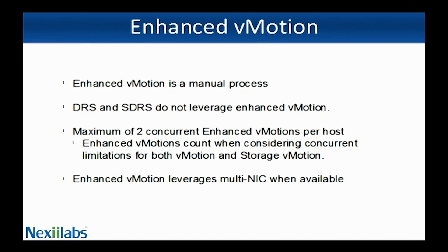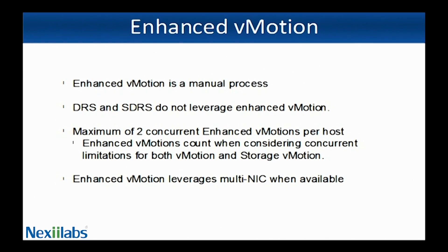Enhanced vMotion is a manual process. DRS and Storage DRS do not leverage Enhanced vMotion. A maximum of 2 concurrent Enhanced vMotions per host can happen, and Enhanced vMotion counts toward concurrent limitations for both vMotion and Storage vMotion. Enhanced vMotion leverages multi-NIC when available. Enhanced vMotions are more expensive and thus must be factored in when making migration decisions. Neither DRS nor Storage DRS leverage Enhanced vMotion technology in vSphere 5.1.